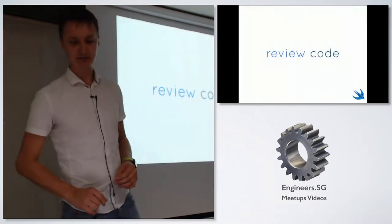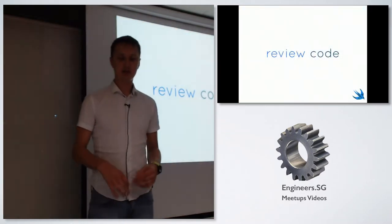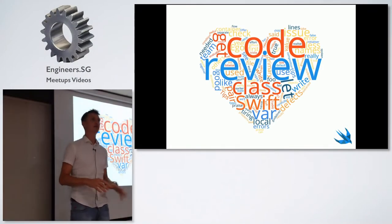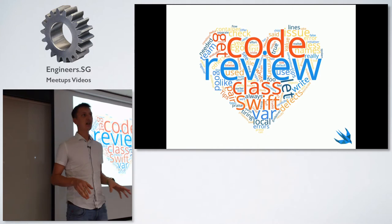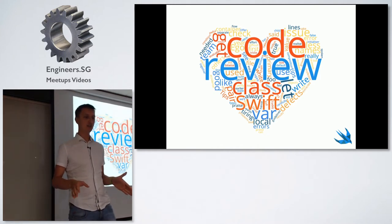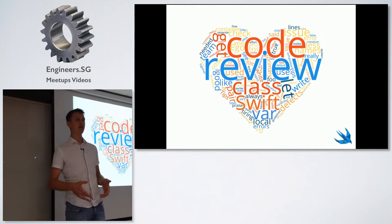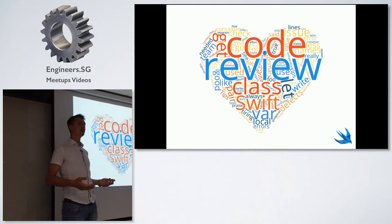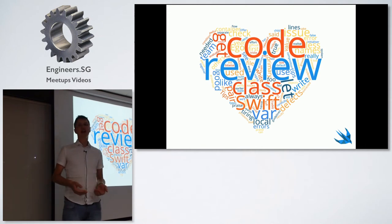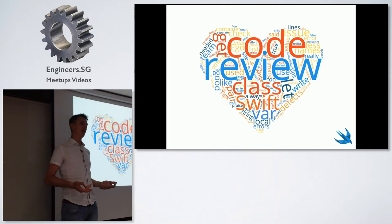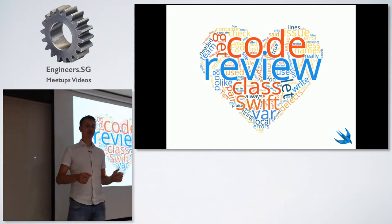So we should review code — but what actually is a code review? Code review is a process of finding and fixing mistakes overlooked during an initial phase of software development. It's intended to enhance the quality of the source code and to improve the skills of each individual in a development team.